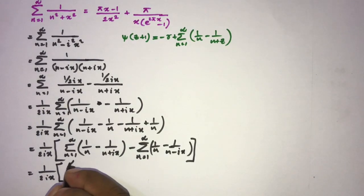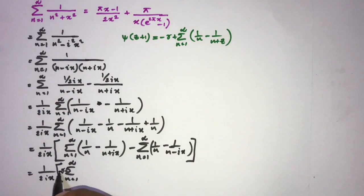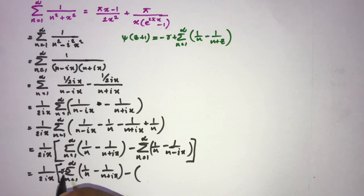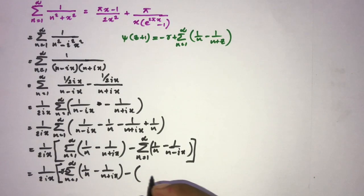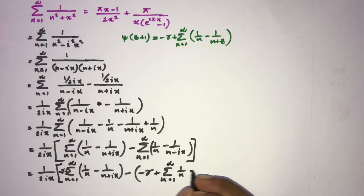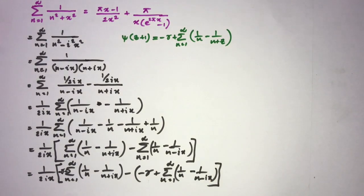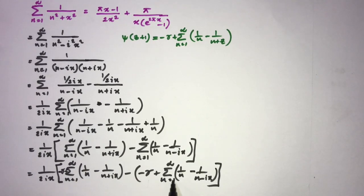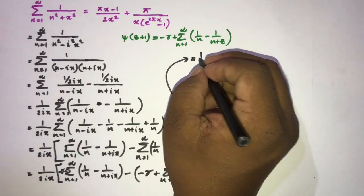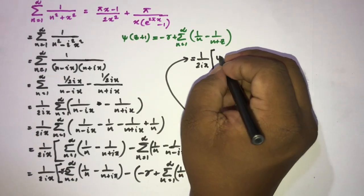Now I subtract the Euler–Mascheroni constant γ and add it back appropriately. The expression −γ + ∑(n=1 to ∞)(1/n − 1/(n + ix)) equals ψ(1 + ix), and −γ + ∑(n=1 to ∞)(1/n − 1/(n − ix)) equals ψ(1 − ix).